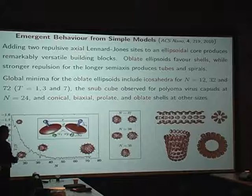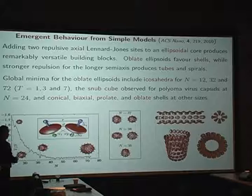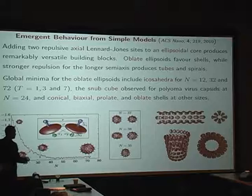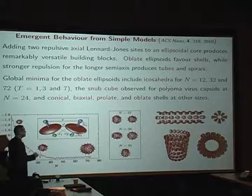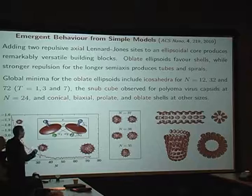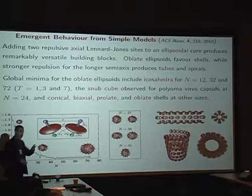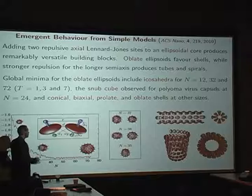We have an icosahedron at 32. This is actually 24, the snub cube again. This is 72, which is the next size up, the next icosahedron. And at intervening sizes, you get distorted structures. You can actually get conical, biaxial, prolate, oblate shells, things like that. So it's an alternative to some of the other models that some other people are going to talk about later in this workshop. This is the one that we've played with most. It's incredibly adaptable. So you can make tubes, spirals, and so on out of it.